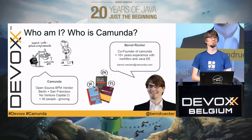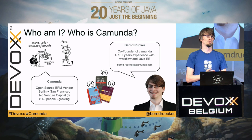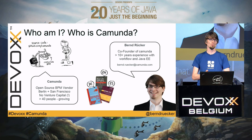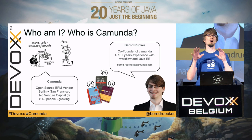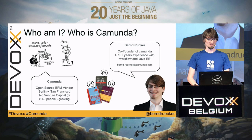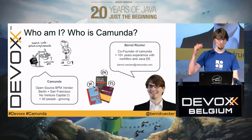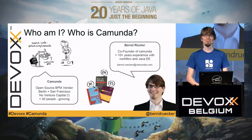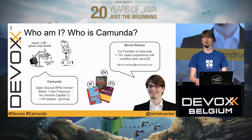Camunda is an open source BPM vendor — we're making a BPM platform. We're based in Berlin and have a subsidiary in San Francisco. We're currently approximately 40 people, which is always interesting as an open source company. We are not venture capital-based, so we are basically growing sustainably, which I think is a big difference in how the company behaves. I'm here till tomorrow around lunchtime if you have any questions.